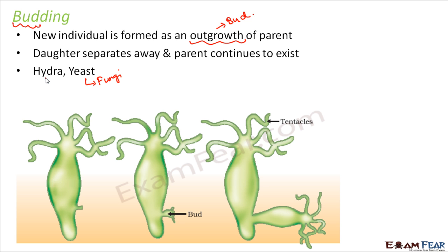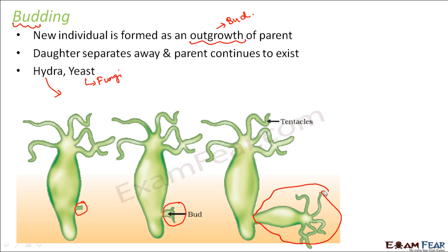Let us look at the example of hydra. This is how hydra looks with its tentacles. A small outgrowth appears on the hydra's body, and this outgrowth will gradually grow. It has almost become a new hydra, and then it separates out. That is how a new organism is formed. Notice that the parent was existing before and the parent exists even now — the parent remains as it is.